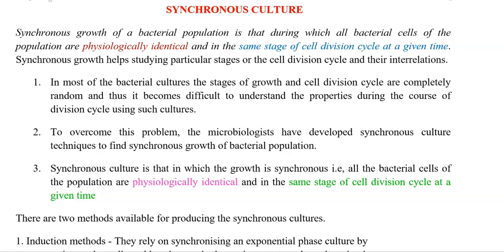In most bacterial cultures, the stages of growth and cell division cycle are completely random. So it becomes difficult to understand the properties during the course of cell division by using such cultures. In order to overcome this randomness in cell division, microbiologists have developed the synchronous culturing technique.